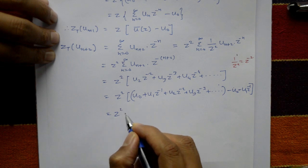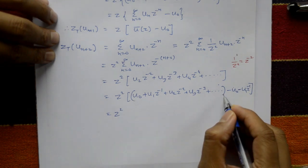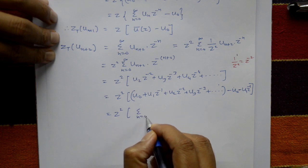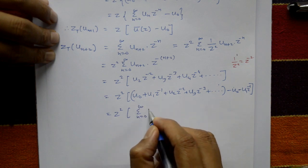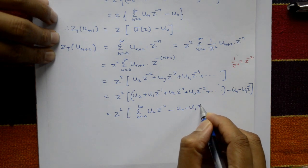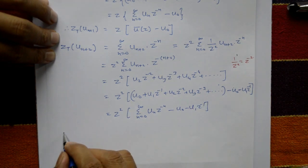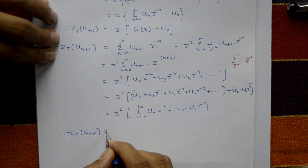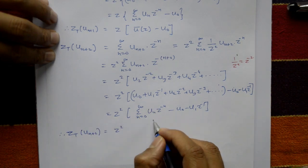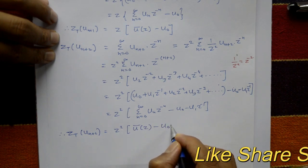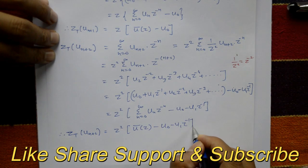This equals Z squared times the bracket: summation from n=0 to infinity of u(n) Z raised to minus n, minus u(0), minus u(1) Z raised to minus 1. Therefore, the Z-transform of u(n+2) equals Z squared times [U(z) minus u(0) minus u(1) Z raised to minus 1].